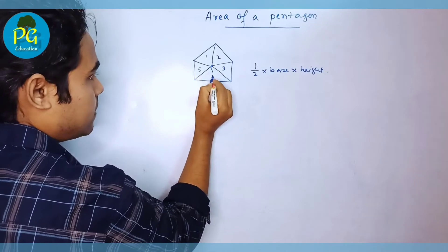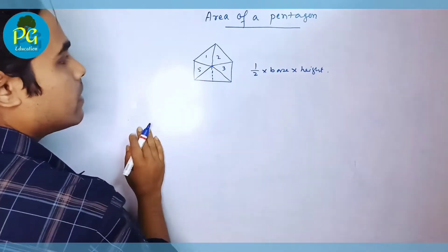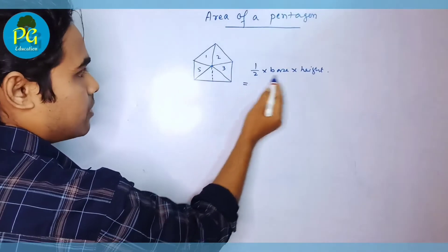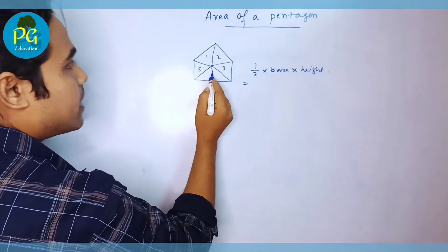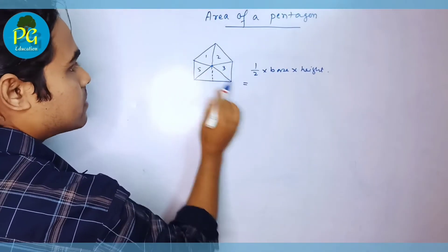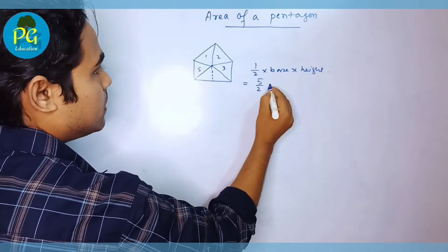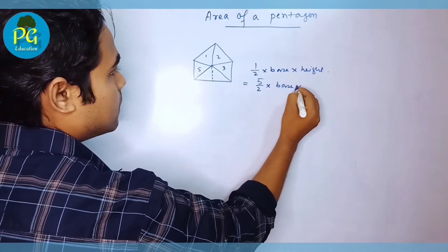This is the height of a triangle. Okay. So its area is half into base into height. How many triangles are there? Five triangles. So five by two into base into height.